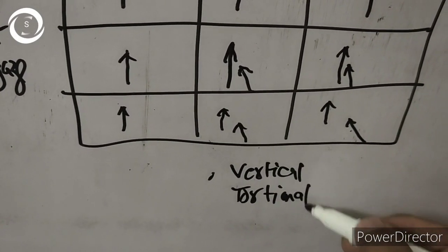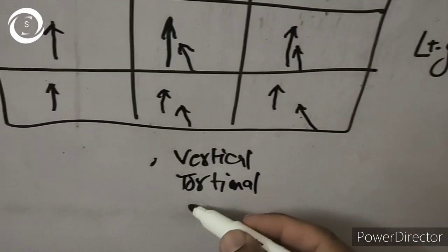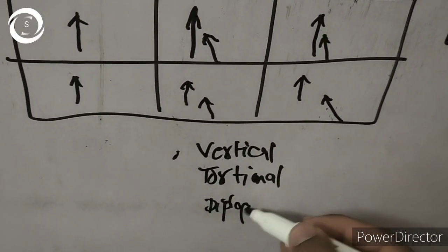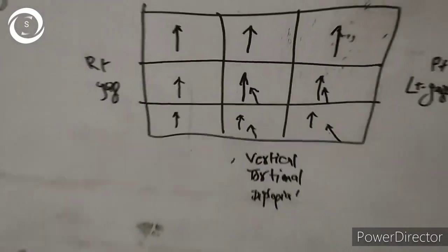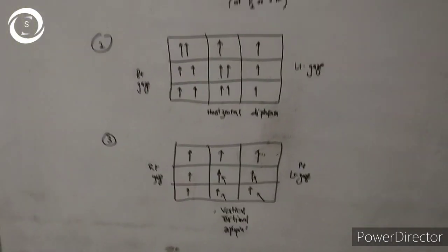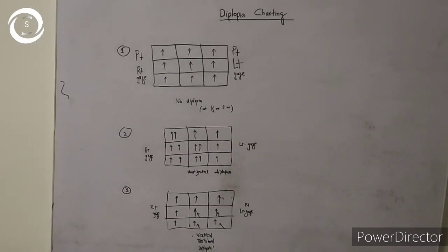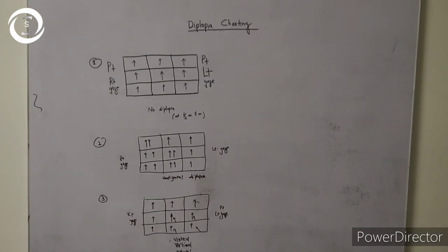After diplopia charting you can go for Hess charting, which is more quantitative and detailed assessment of paralytic squint. Thank you very much.